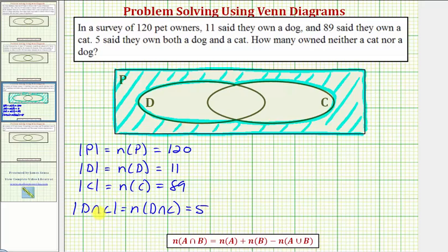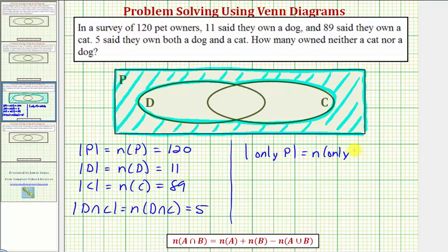Remember, intersection means "and," so there are five owners that own both a dog and a cat. Now let's write the notation we can use to determine the number of owners that owned neither a cat nor a dog. If they don't own a cat or a dog, they'd have to be only in set P. We could say the cardinality of only P, or more formally, the cardinality of the complement of D union C, which contains the number of elements that are not in D or C.